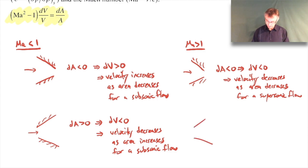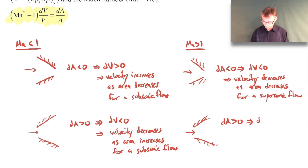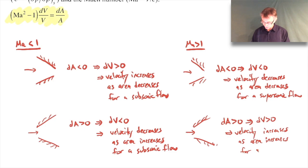For the supersonic increasing area case (dA positive): dA is positive, (M² - 1) is positive, so dV must also be positive to match. Velocity increases as the area increases for a supersonic flow - again, just the opposite behavior from a subsonic flow.